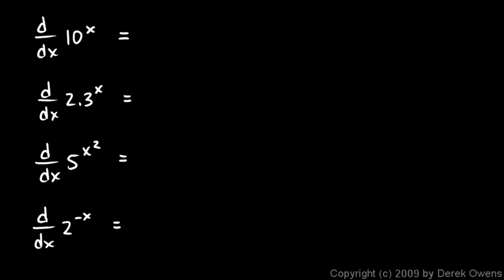Here are four examples — we're trying to differentiate all of these, and all of them are base-b exponents. We'll apply the formula: the derivative with respect to x of b^x is b^x times the natural log of b.